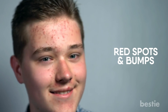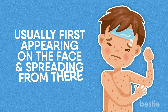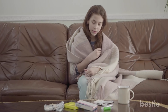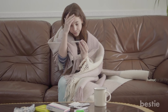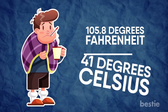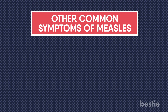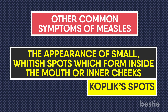After this period, those infected with the measles virus may experience a rash consisting of red spots and bumps that give the skin a blotchy appearance, usually first appearing on the face and spreading from there. During this period, the infected individual may also experience a significant spike in temperature, with fevers often rising as high as 105.8 degrees Fahrenheit or 41 degrees Celsius. Other common symptoms of measles include the appearance of small, whitish spots which form inside the mouth or inner cheeks, which are sometimes referred to as complex spots.